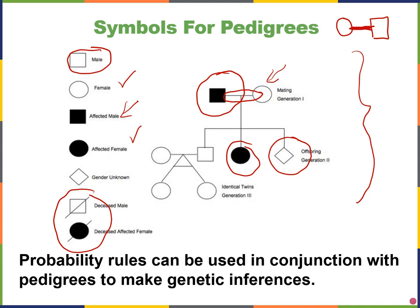If you see the line coming from the top of the circle or square, or the unknown sex symbol, then that individual is a child of the previous generation, of that previous couple. And if you ever see lines like this, that indicates twins — in this case, they are probably monozygotic twins, identical twins that came from one zygote.